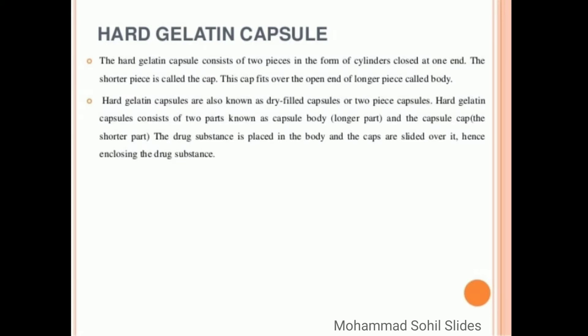Hard gelatin capsules are also known as dry-filled capsules or two-piece capsules. Hard gelatin capsule consists of two parts known as capsule body, which is the longer part, and the capsule cap, which is the shorter part. The drug substance is placed in the body and the caps are slid over it, hence enclosing the drug substance.